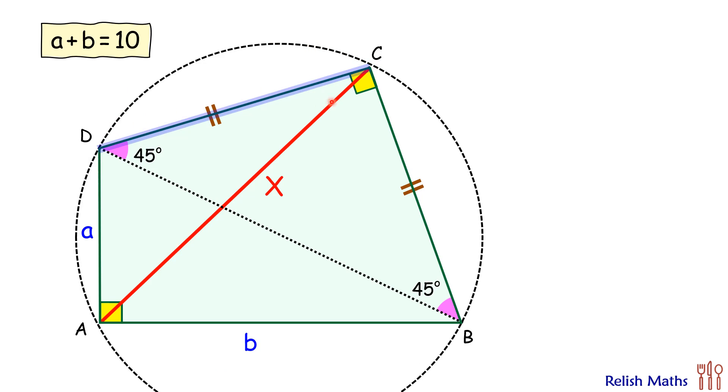And we know that in a circle, a chord sustains equal angles on the same side of the segment. So here CD is sustaining an angle of 45 degrees at point B, so at point A also it will sustain an angle of 45 degrees. Also, angle A's full angle is 90, so this remaining angle will be 45 degrees.